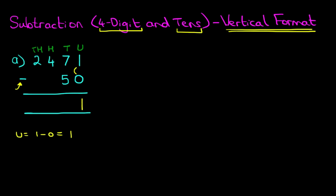Now, whilst I'm showing you the workings in yellow at the bottom, that's just me explaining what you need to do. Once you develop a bit of speed on this, you won't need to do any workings and just answer the question. So, the tens: we've got 7 minus 5. 7 minus 5 is 2.